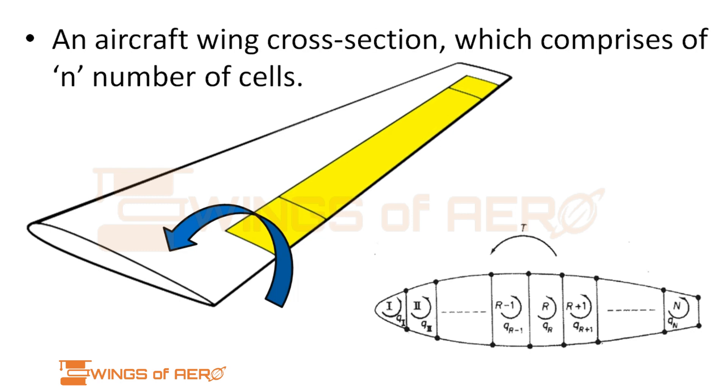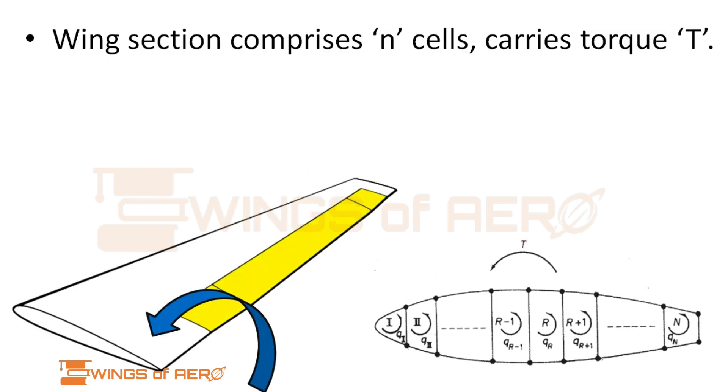An aircraft wing cross section comprises of n number of cells. The wing section comprises of n number cells carries a torque T.